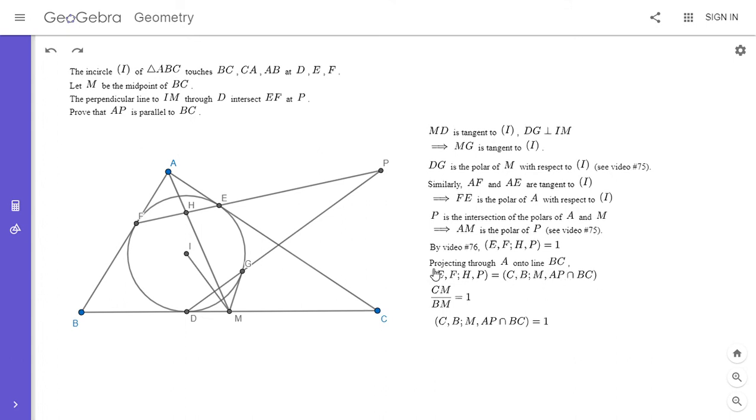So this cross ratio is equal to this, which is equal to one. And so since the first fraction in it is equal to one, CM over BM, we have to have AP intersects BC at the point at infinity on line BC. And so from there, it follows that AP is parallel to BC. And that solves the problem.